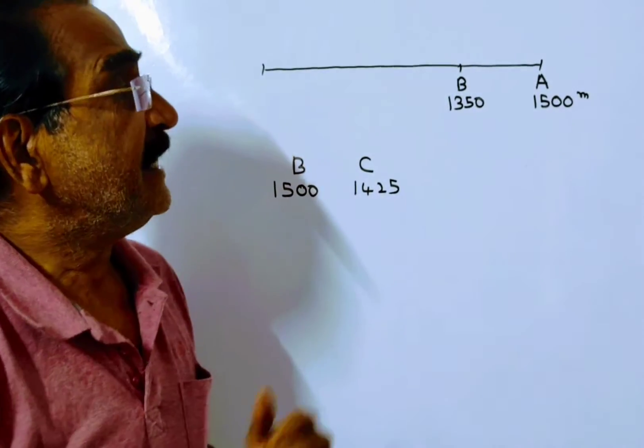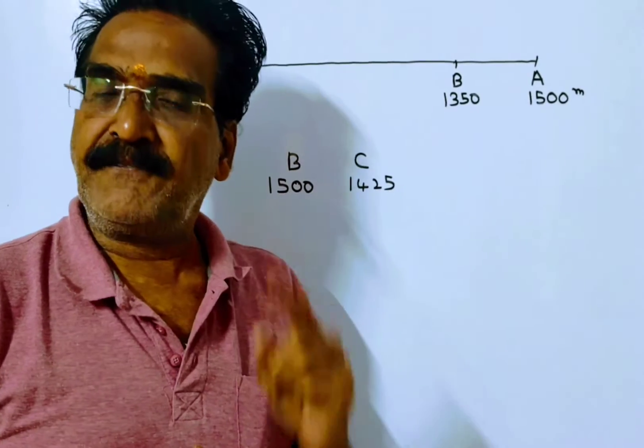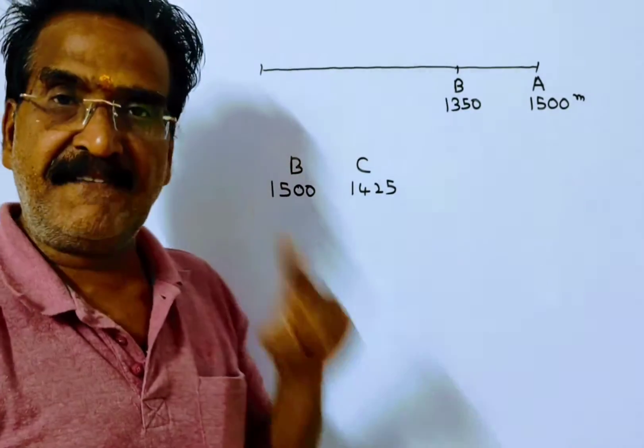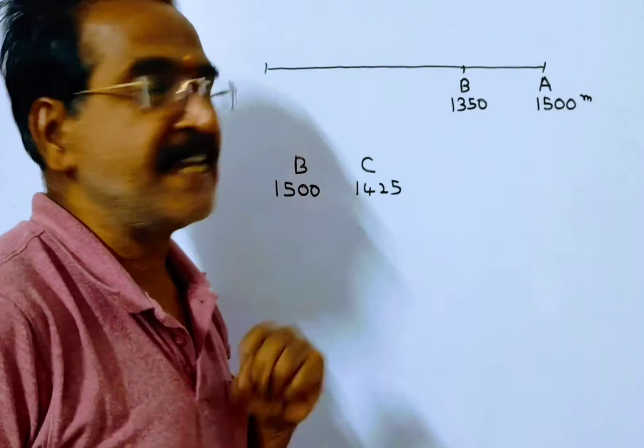Friends, good morning. Friends, in a 1500 meters race, A beats B by 150 meters and B beats C by 75 meters. By how many meters does A beat C in the same race?